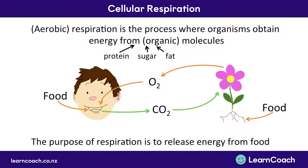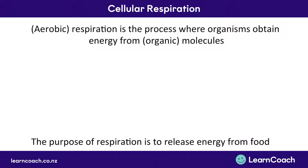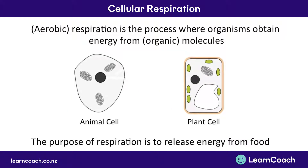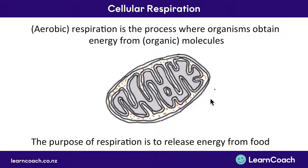The purpose of respiration — and this is what you need to remember — is to release the energy from food. It's slightly different for plant cells and animal cells, so we'll delve into each one. You have mitochondria in both cells. They're not very common in plant cells, and there are lots of them in animal cells, but they're there in both, and this is the place where respiration happens.